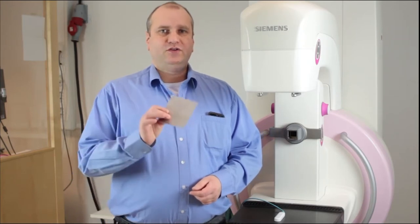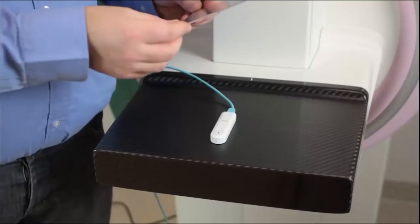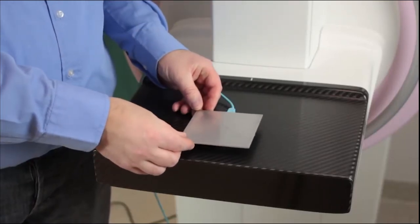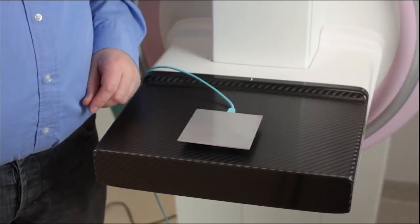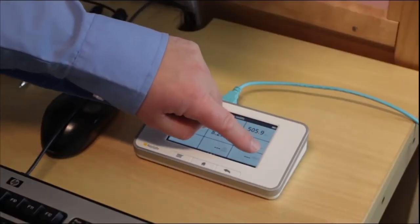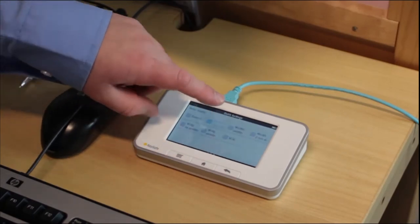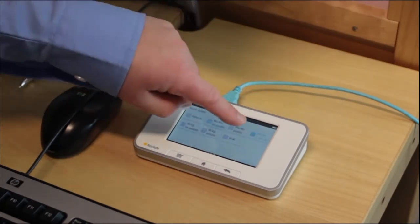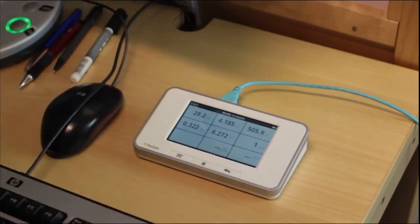For KVP parameter on molybdenum beam quality, you need a 2mm aluminum filter. Place it directly on top of the sensor, and now we do the settings and make the exposure. To be able to get KV for molybdenum, we need to check molybdenum 2mm aluminum and then go back. Make a new exposure, and now we get the KV value also for molybdenum.